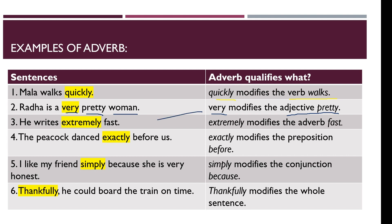Number three: 'He writes extremely fast.' Here, 'writes' is the verb, and 'fast' is also an adverb qualifying the verb. 'Extremely' means very much or a lot — so 'extremely' is an adverb modifying another adverb, 'fast.' Adverb 'extremely' is modifying adverb 'fast.'